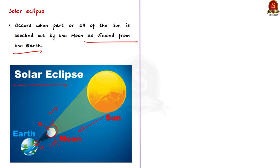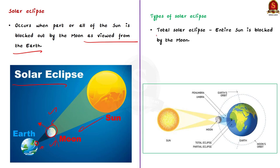There are three types of solar eclipse. First is the total solar eclipse. This occurs when the entire sun is blocked by the moon due to the alignment of sun, earth and moon.